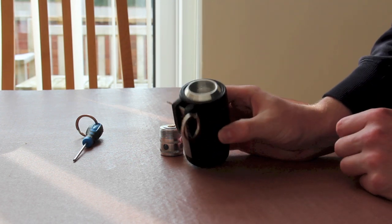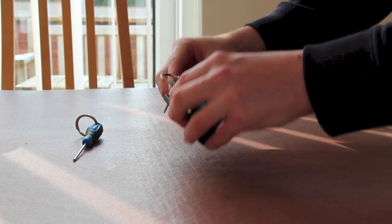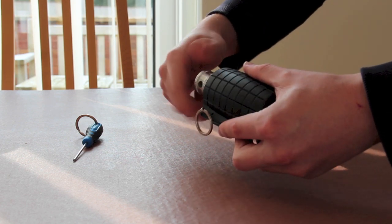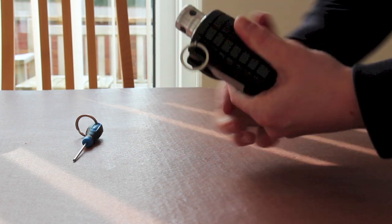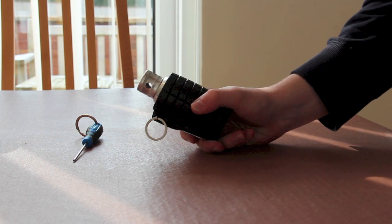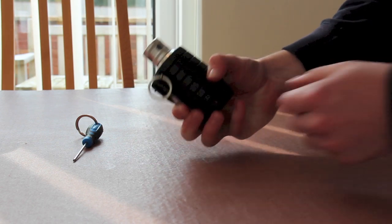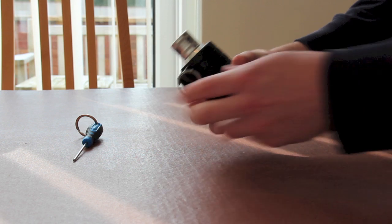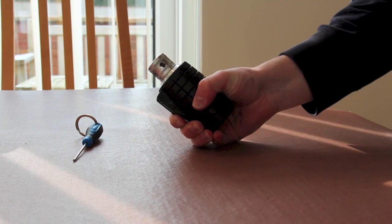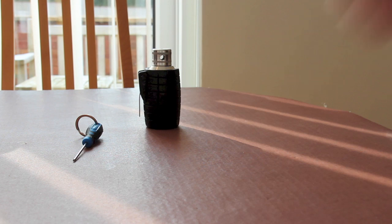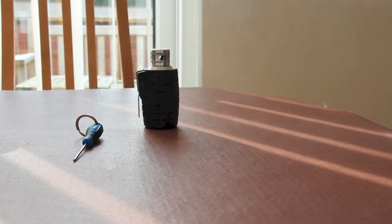The grenade is now primed. All we need to do, screw on our cap containing our ammunition. Make sure it's on nice and tight. Grenade is now live. To deploy the grenade, hold the spoon, pull the pin. Grenade is now ready to fire. Deploy the grenade. And the grenade will go off as such.